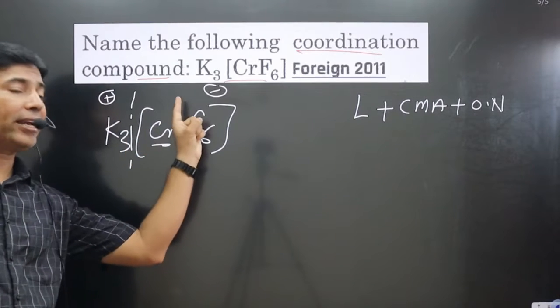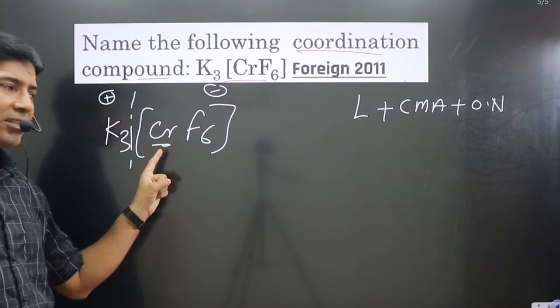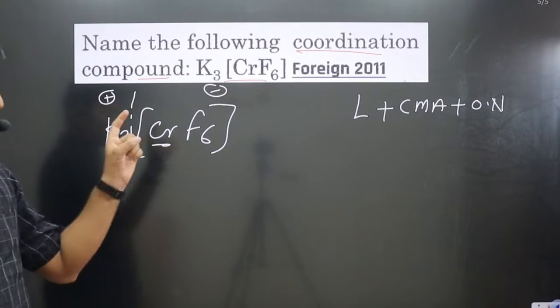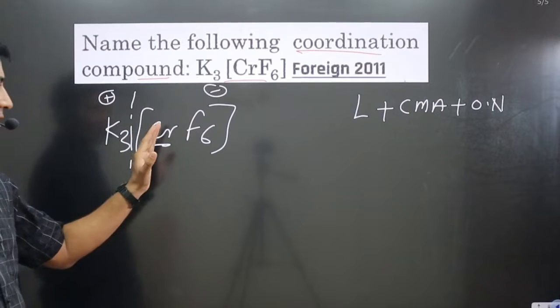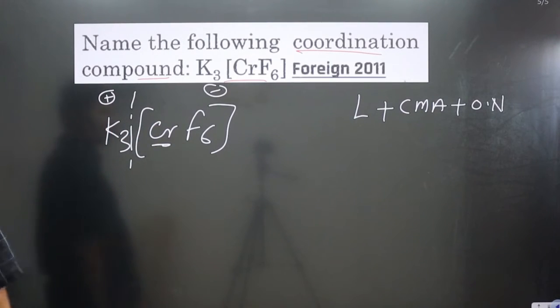Whenever it is present in the anionic complex, we have to use its special name. If chromium is there, in the naming I will write chromate. In case it is present in the cationic complex, we use the common name as given in the periodic table.